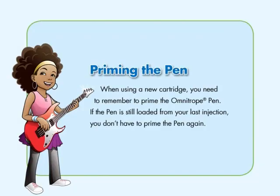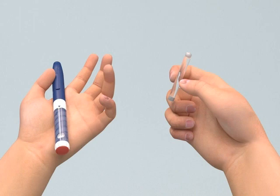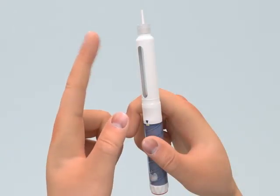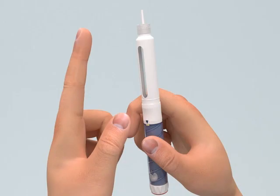If you're using a brand new cartridge, you need to prime your Omnitrope pen. Priming is only needed when the cartridge is new. Carefully inspect the solution before injecting. You should only use the cartridge if the solution is clear and colorless. Hold the pen with the needle pointing upwards. Gently tap the cartridge holder with your finger to help air bubbles rise to the top of the cartridge.